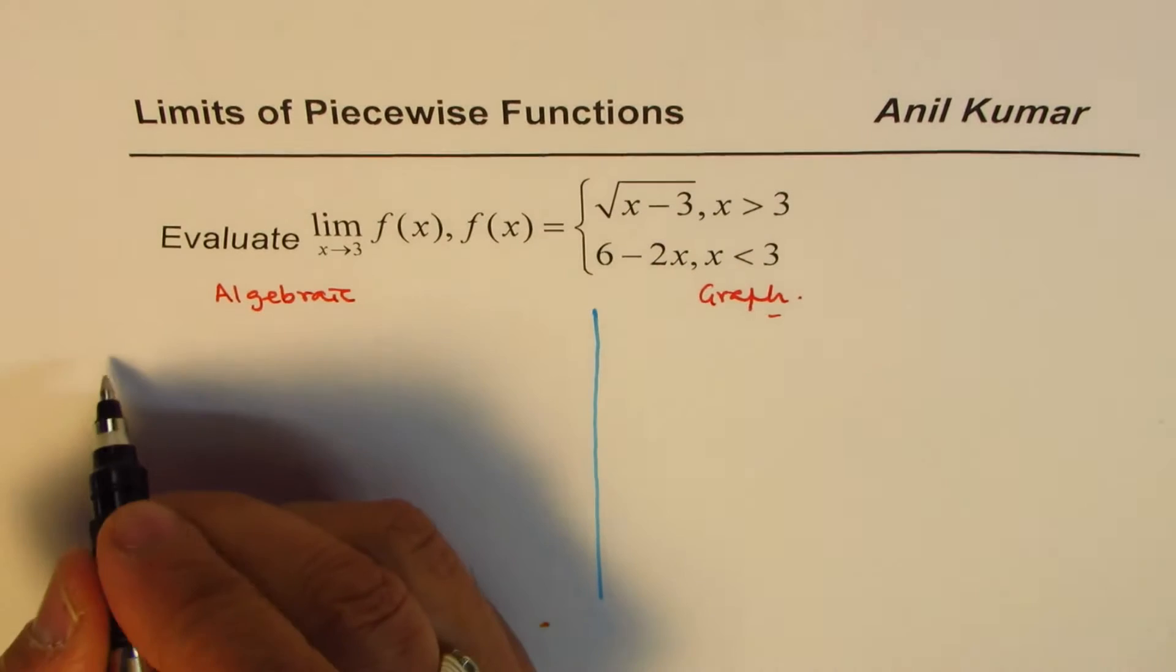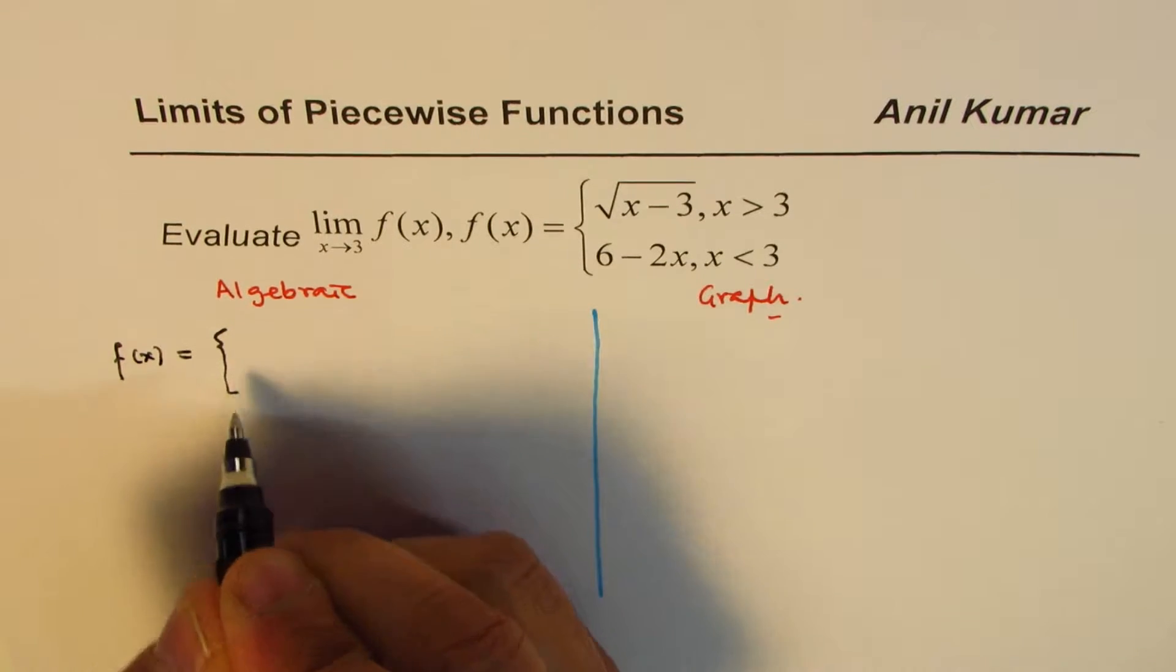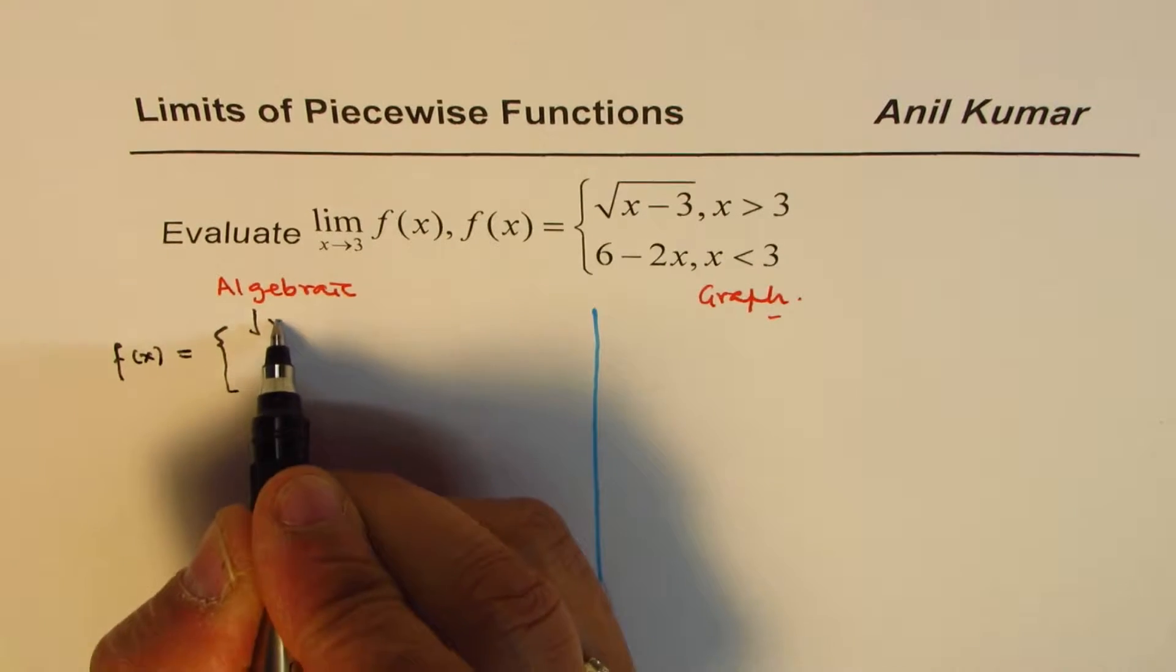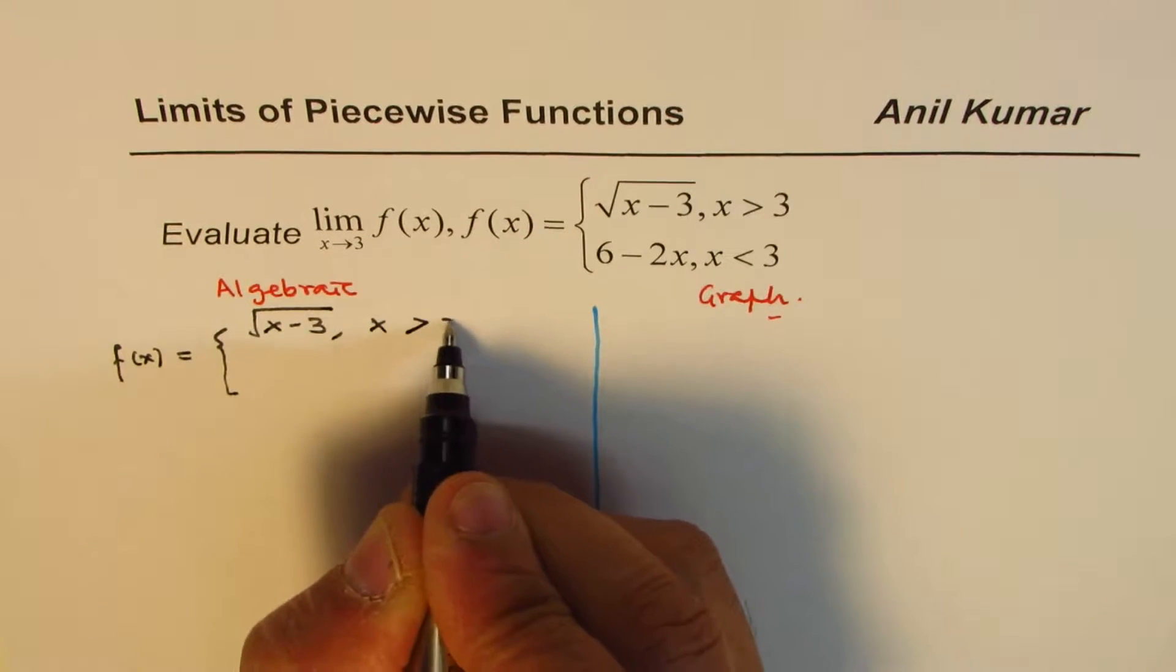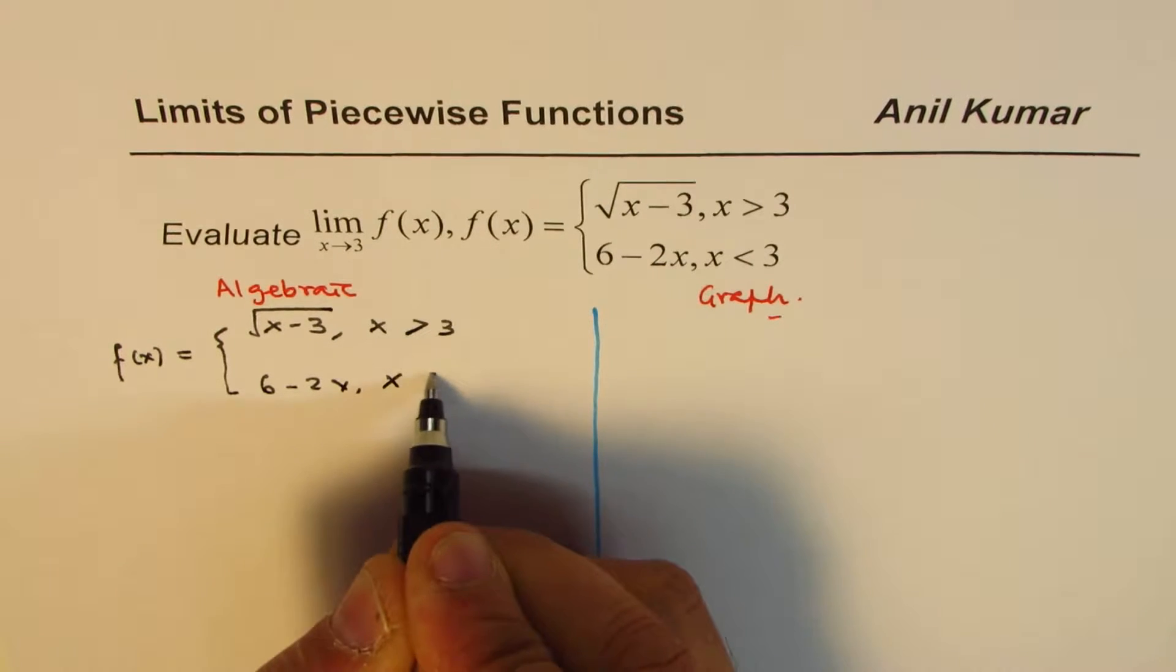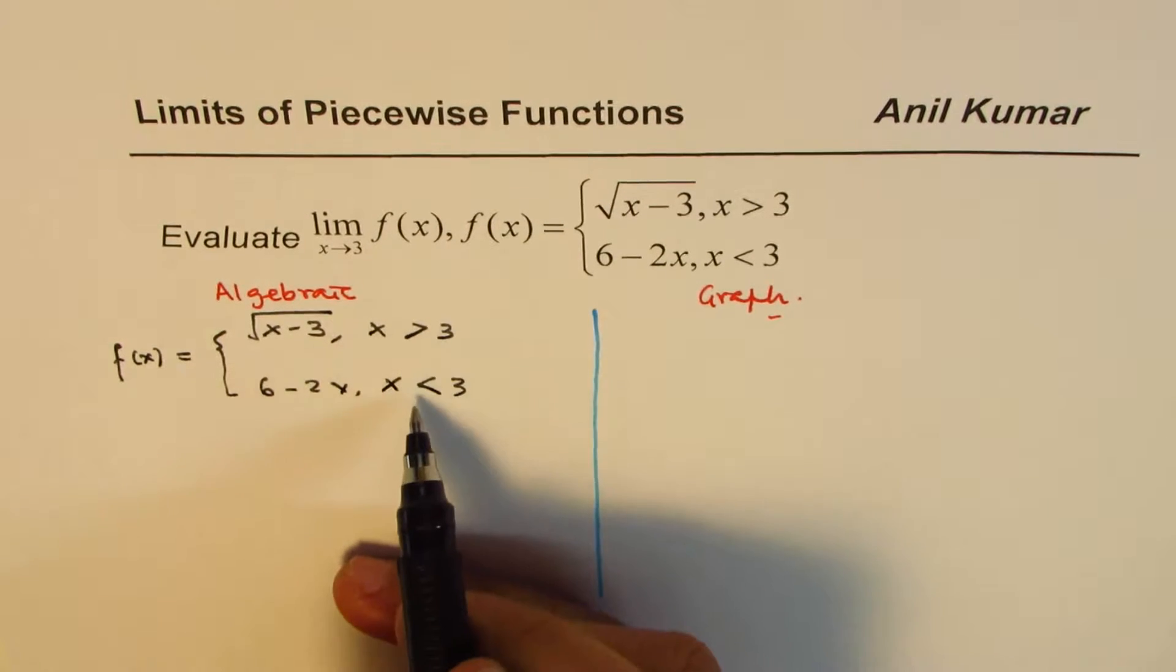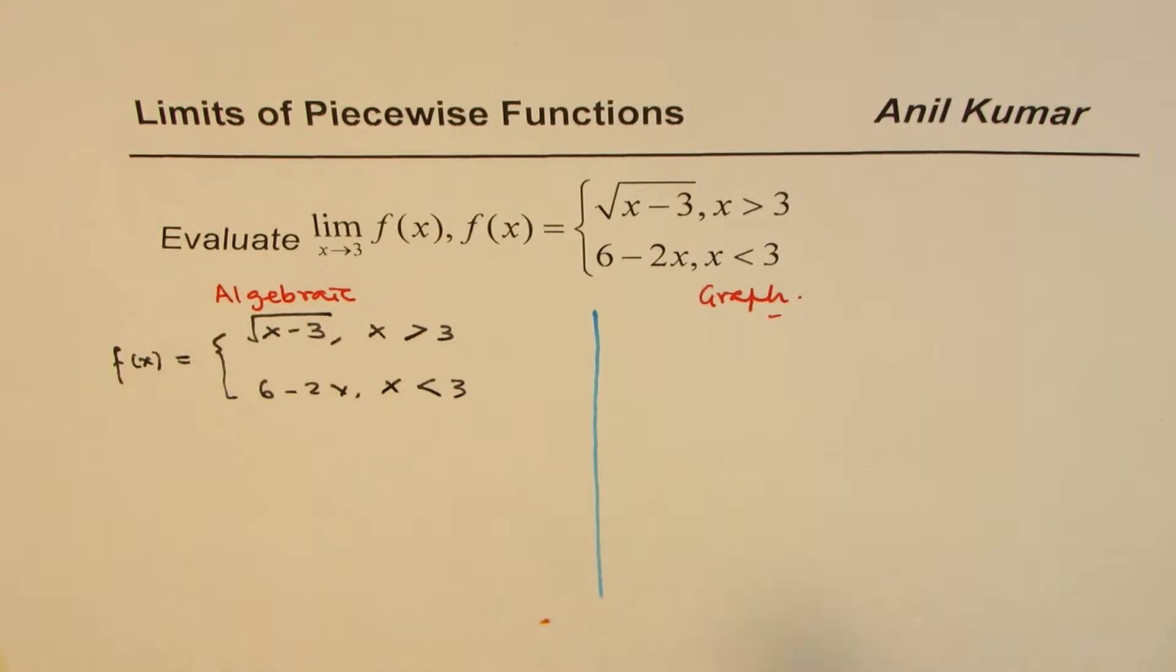Let's rewrite this question here where f of x equals one branch is square root of x minus 3 when x is greater than 3, and the other one is 6 minus 2x when x is less than 3. You can see very clearly at 3 the function is not defined.